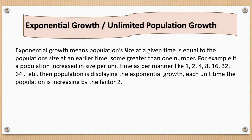Exponential growth means the increase of a population in an ideal environment, as well as the capacity of a species to increase the population. It occurs when members of a population reproduce at a steady rate. For example, a population increases in size per unit time in the manner: one individual reproduces to two, two to four, four to eight, eight to sixteen, and so on — as in lower organisms like protozoa. The population is displaying exponential growth; each unit time the population increases by the factor two.